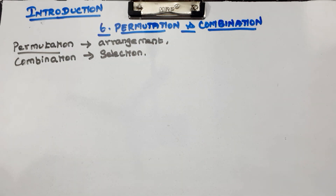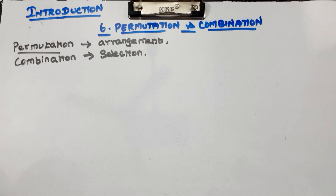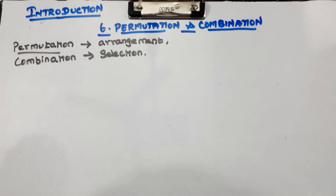Combination means selection. How do you do a selection? You can select VIPs, you can select a group. That group which is selected — that is combination. Do you understand?